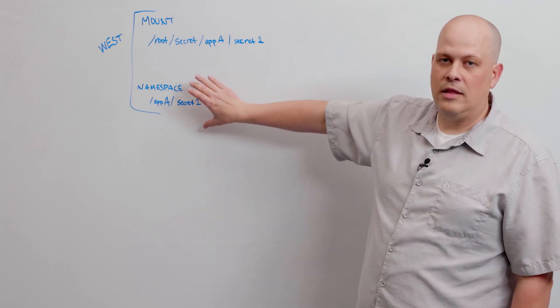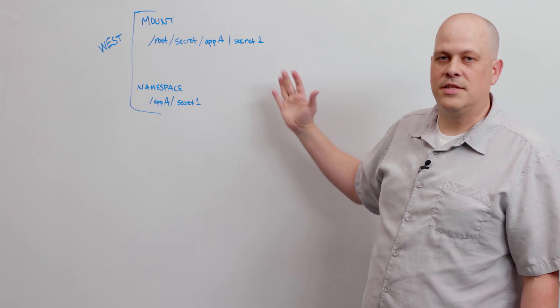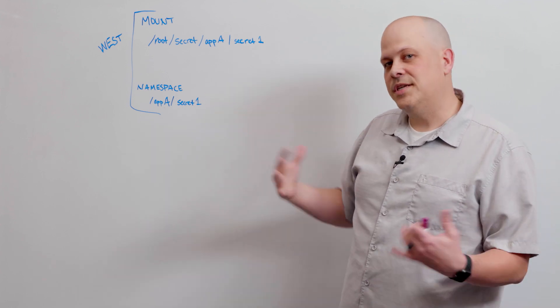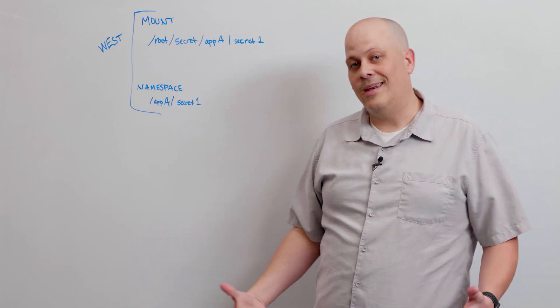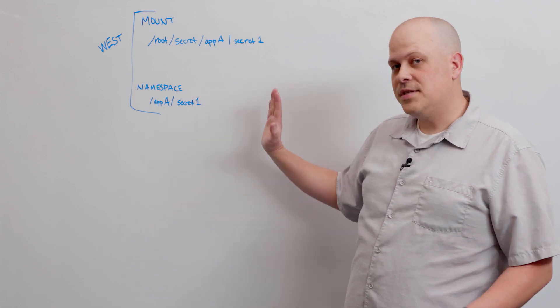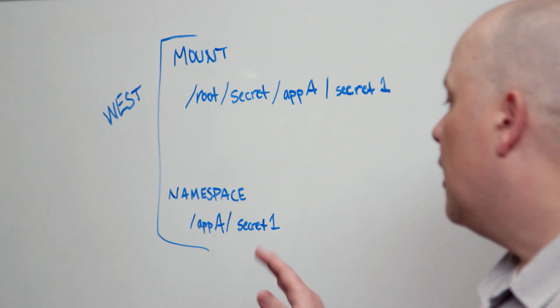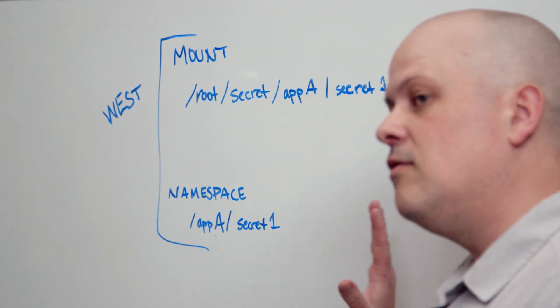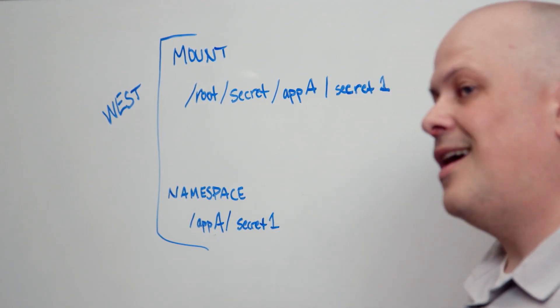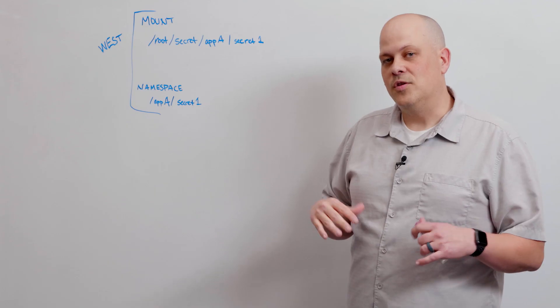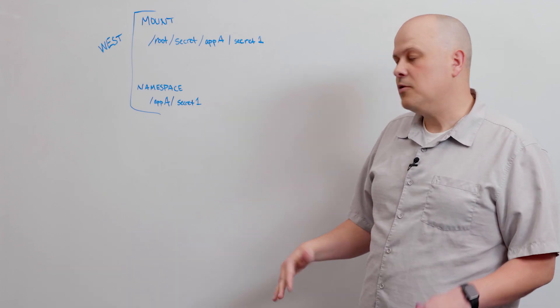Later on in the Vault life cycle, we came up with the concept of namespaces, which essentially allows you to run a vault within a vault. It uses the same sort of pathing structure that we have available in simple mounts. You can actually build mounts inside of namespaces and it gives you the opportunity to isolate those secrets that you're storing apart from other secrets.